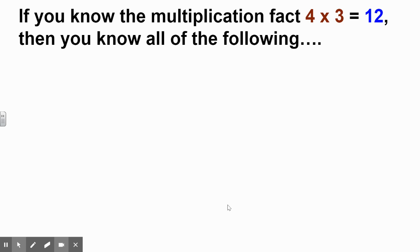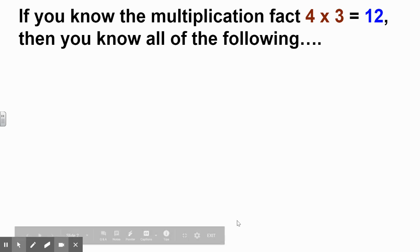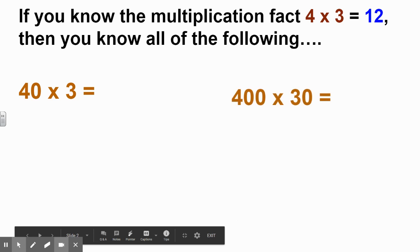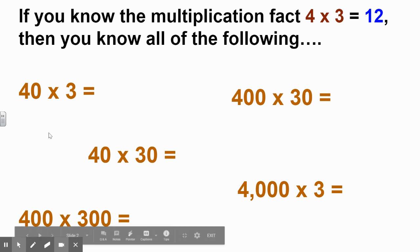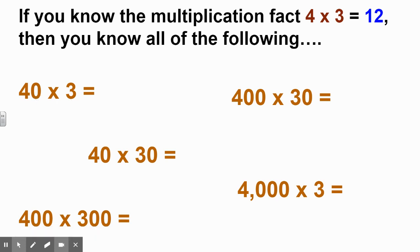This shortcut is amazing because if you know a single multiplication fact — for example, four times three equals twelve — then you know all of the following: forty times three, four hundred times thirty, forty times thirty, four hundred times three hundred, four thousand times three. All of these multiplication problems have something in common: they have a four times three somewhere in there, just with some additional zeros.